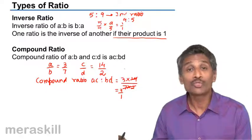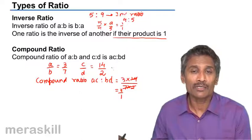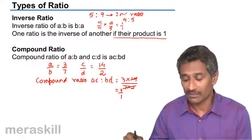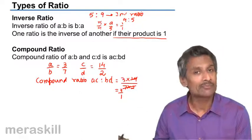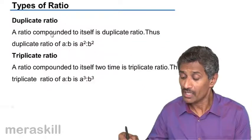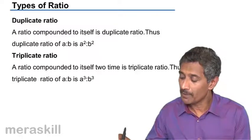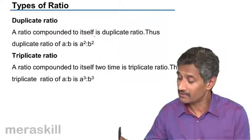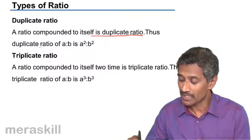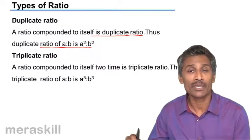Remember, duplication is a kind of compounding, but you're compounding a particular ratio with itself. So we have the inverse ratio and compound ratio. Now, the duplicate ratio: a ratio compounded to itself is a duplicate ratio. The duplicate ratio of A is to B is A square is to B square.